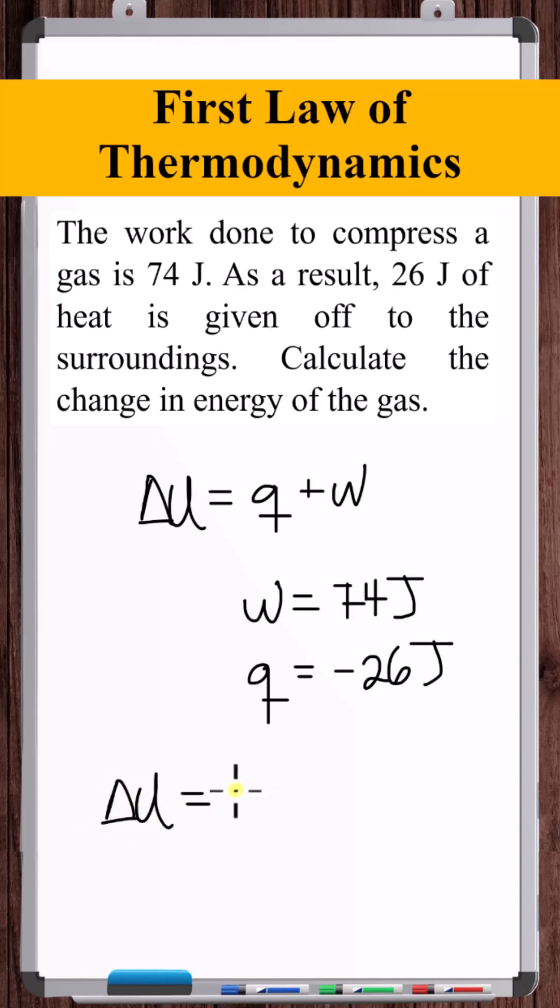So ΔU equals negative 26 plus 74. The internal energy of the system, which is the gas, increases by 48 joules.